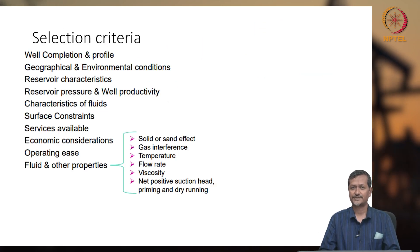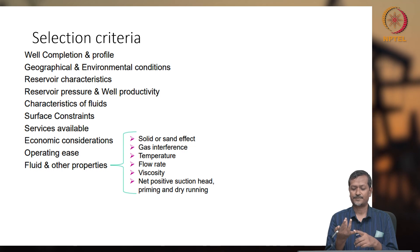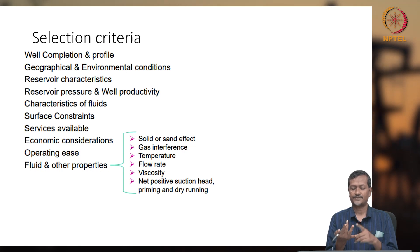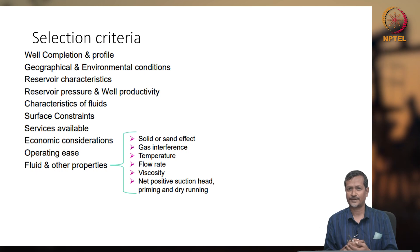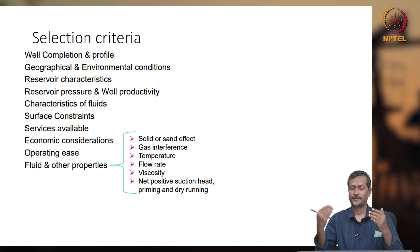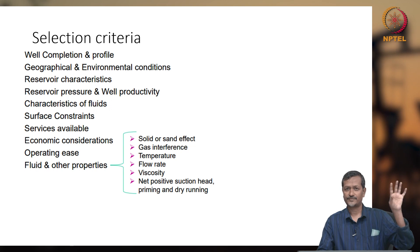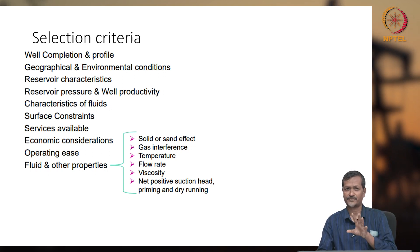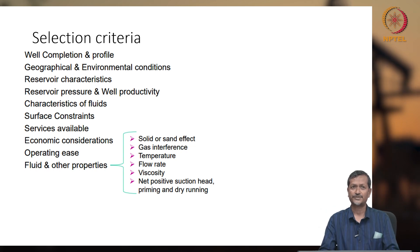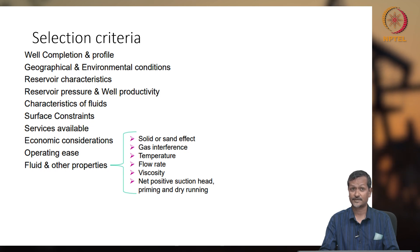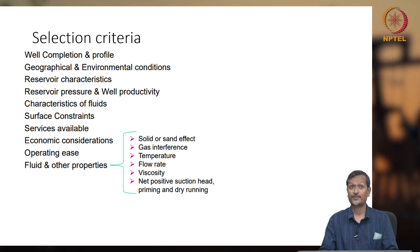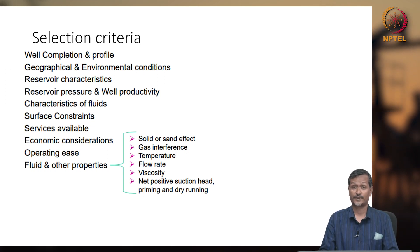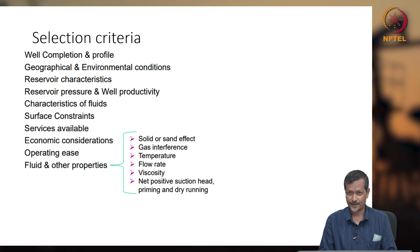We have now seen different types of artificial lifting systems: SRP, ESP, PCP, gas lift, and jet pump — basically five types, with subsections such as metal PCP. Now, the selection criteria: you must know the well completion profile, geography, environmental conditions, and whether the location is regularly accessible. For example, for offshore wellbores, not all artificial lift types are suitable. You must also know reservoir characteristics, two-phase flow, decline rate, and reservoir pressure.